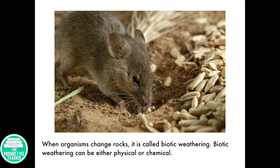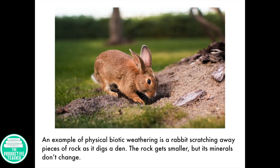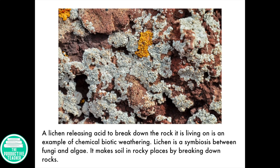When organisms change rocks, it is called biotic weathering. Biotic weathering can be either physical or chemical. An example of physical biotic weathering is a rabbit scratching away pieces of rock as it digs a den. The rock gets smaller, but its minerals don't change. A lichen releasing acid to break down the rock it is living on is an example of chemical biotic weathering. Lichen is a symbiosis between fungi and algae. It makes soil in rocky places by breaking down rocks.